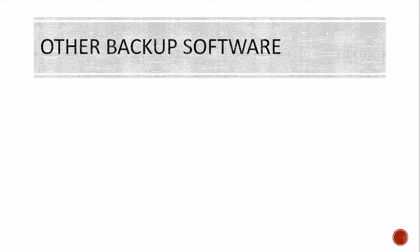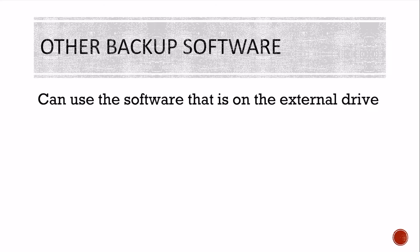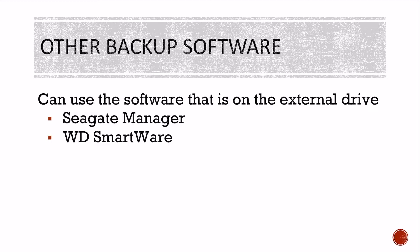Other backup software: you can also use software that comes on an external hard drive. Sometimes when you buy an external hard drive, it has software already on it, such as Seagate Manager or WD Smartware. External hard drives are an inexpensive place to backup your files, and they often include a backup program you can use with one touch to backup your information. You can purchase large-capacity external hard drives for less than $100.